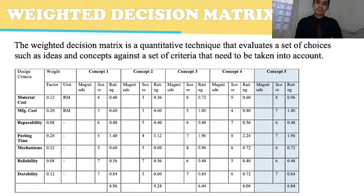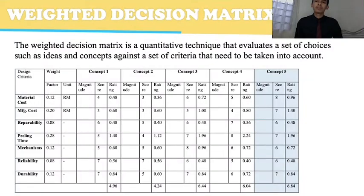Weighted decision matrix. The weighted decision matrix is a quantitative technique that evaluates a set of choices such as ideas and concepts against a set of criteria. It includes design criteria and weight factors for each criterion. The design criteria include material cost, manufacturing cost, repairability, peeling time, mechanism, reliability, and durability. As shown in the table, concept five has the highest net score of 6.84.